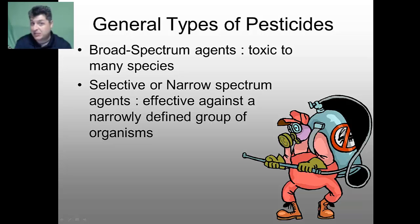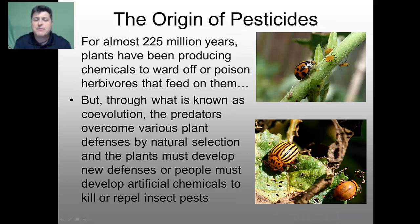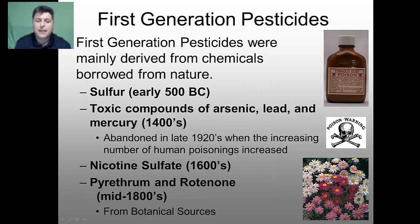Our pesticides are something we actually began to borrow from nature itself. For almost 225 million years, plants have been producing chemicals to ward off or poison herbivores that feed on them. Through a process known as co-evolution, predators would overcome the plant defenses by natural selection, and the plants would then need to develop new defenses, or people would have to develop artificial chemicals to kill or repel those pests.